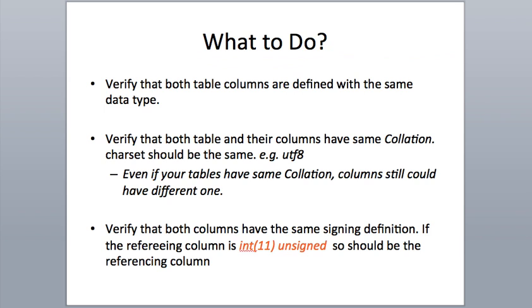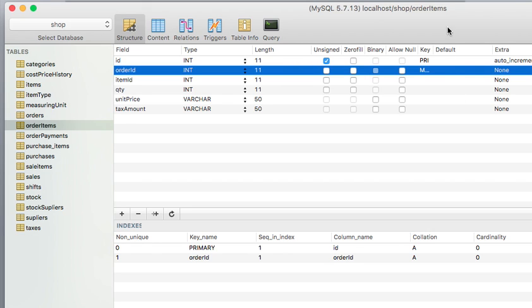Issue number two that we need to look out for: we need to verify that both tables and their columns have the same collation. This means both tables should use the same collation — if the parent table is using UTF-8, the child table should also use UTF-8. And mind you, even the columns should have the same collation. Tables might have the same collation but you may find that the individual columns have different collations, so we need to verify that also. In SQL Pro you can check this through the table information.